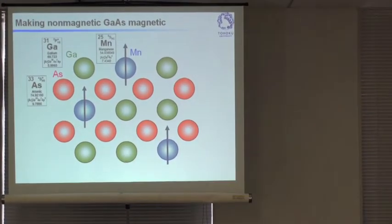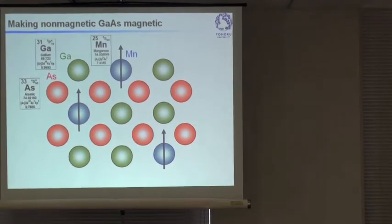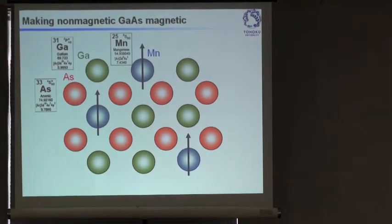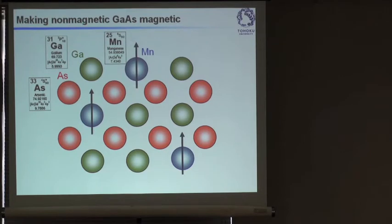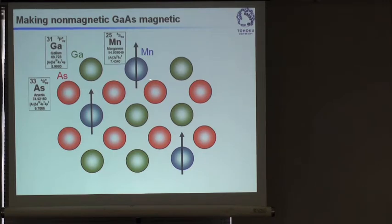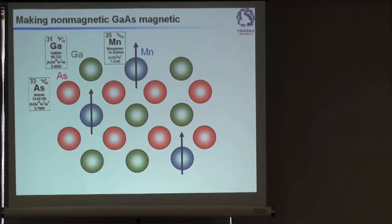The choice was to put some manganese into the system, partially replacing gallium. You can call it doping, but we wanted to make this doping as high as possible to see the magnetic effect — we wanted to go beyond the solubility limit. Parenthetically, manganese has only two S electrons, and when we replace gallium with manganese, there is one missing valence electron. So manganese not only introduces 5D electrons but also introduces a hole — a conduction carrier.